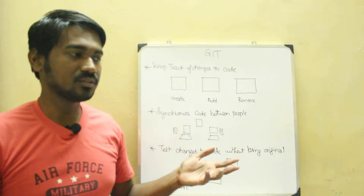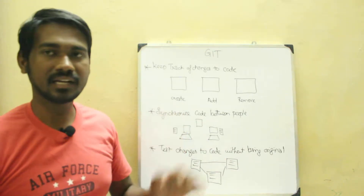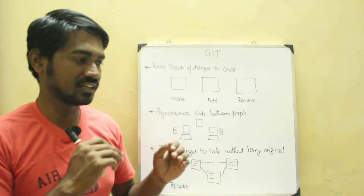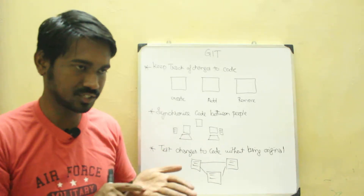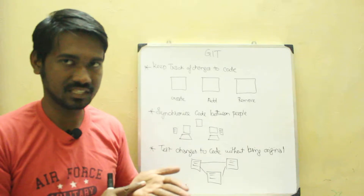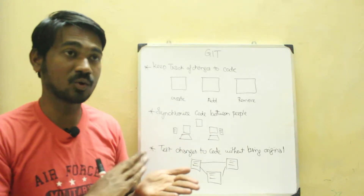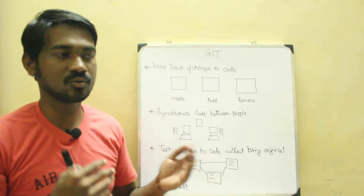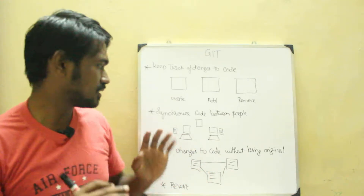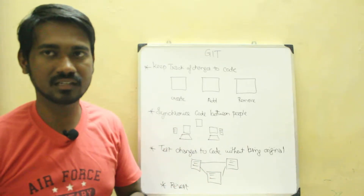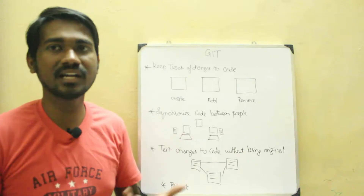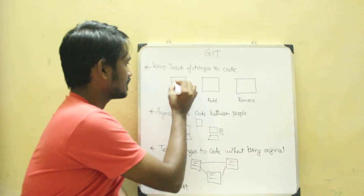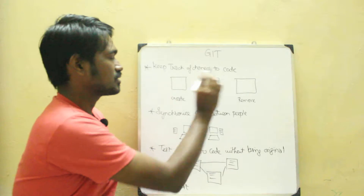But we can maintain this with Git. So, we have version 1, version 2, version 3. You can also make a change or share. Ultimately, there are 4 points for why we want to use Git. That is: first, keep track of changes to code.